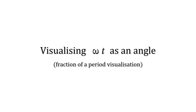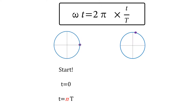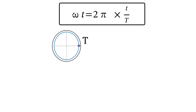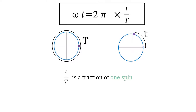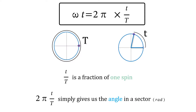The fraction of a period visualization is another way of thinking about omega t. When time equals zero, the sine wave output is equal to zero, and this is also true for any multiple of the period before or after. Sometime later, we've spun a little bit through the circle, so t has a different value. If it takes the period T to spin through one complete circle, then it's going to take a smaller time, little t, to spin through part of a circle. There are 2 pi radians in the circle, so little t compared to the period is just a fraction of one spin — omega t is just a fraction of 2 pi radians, giving us the angle in a sector.